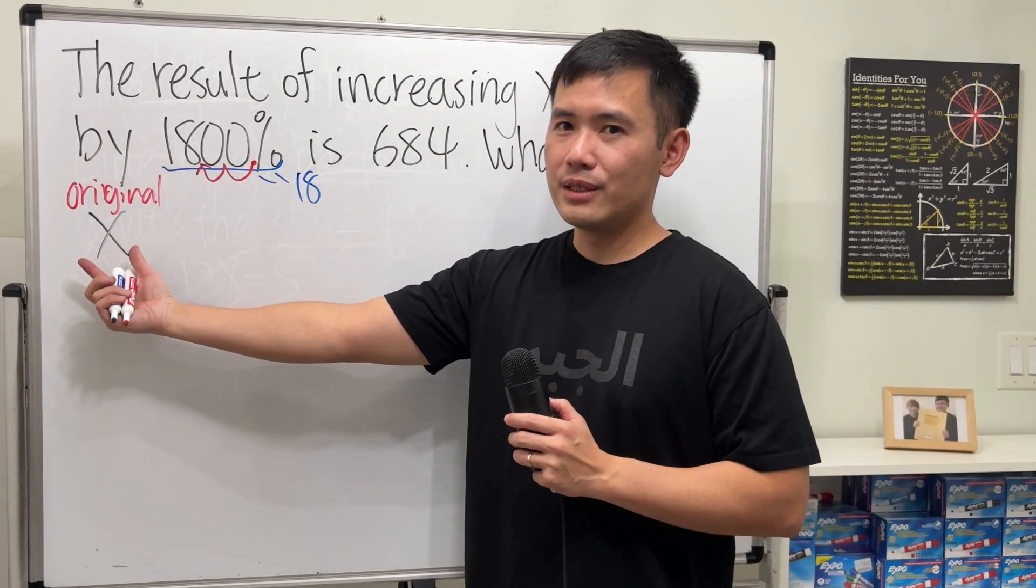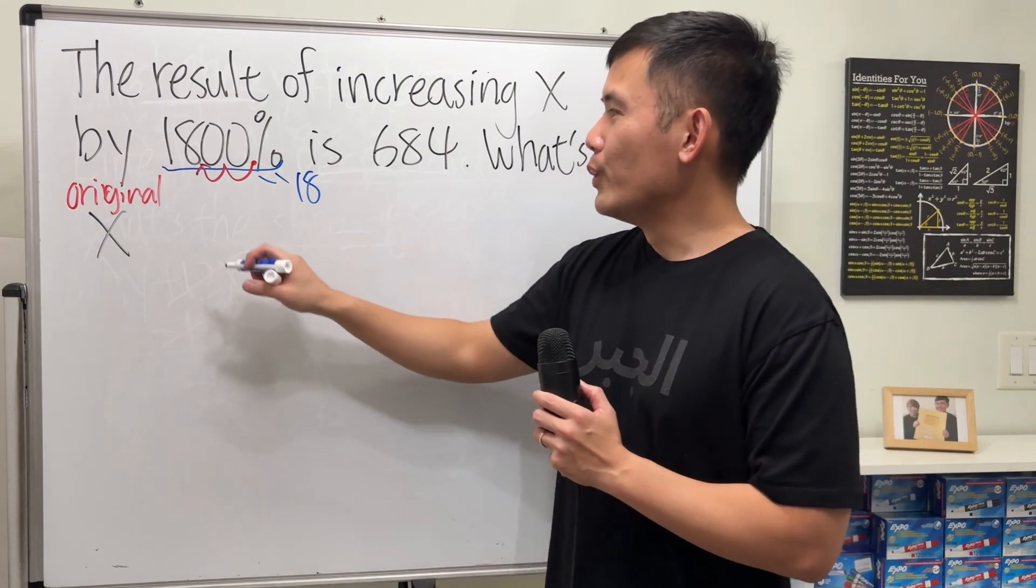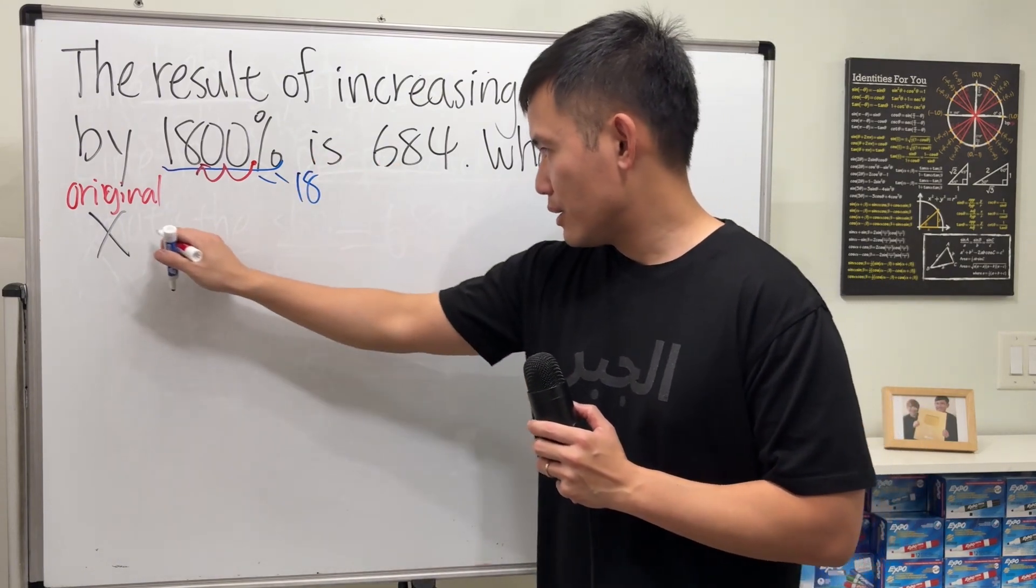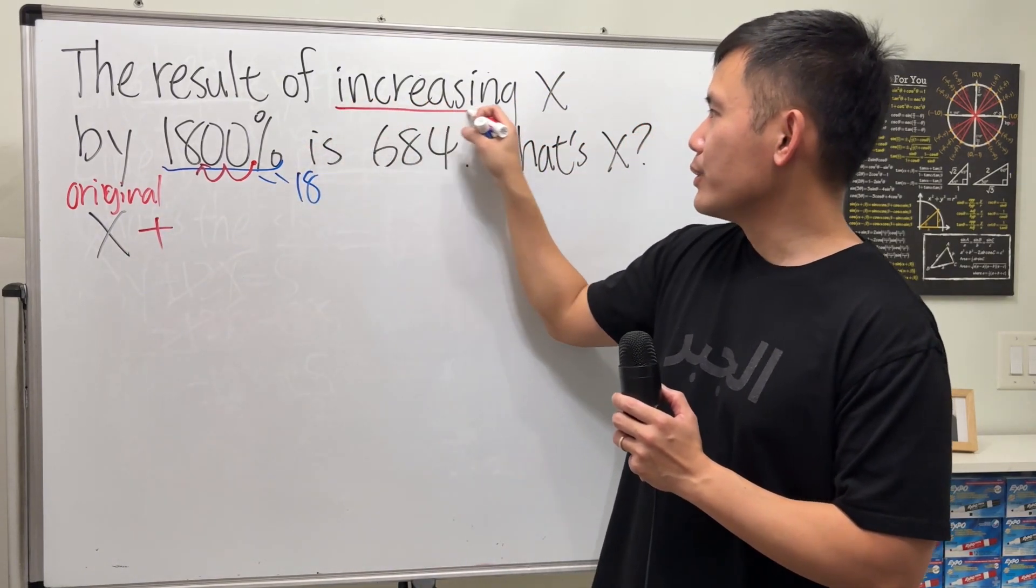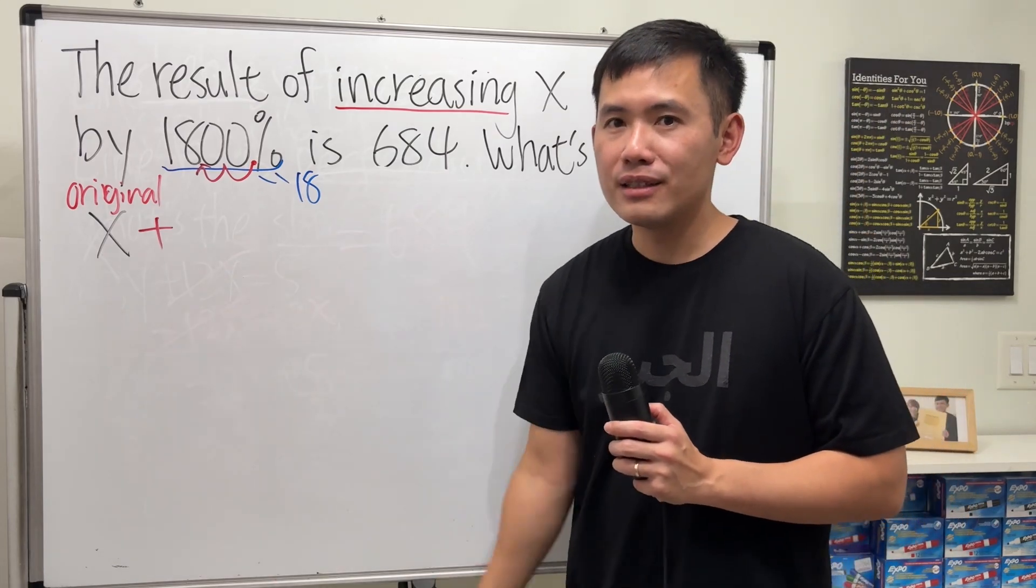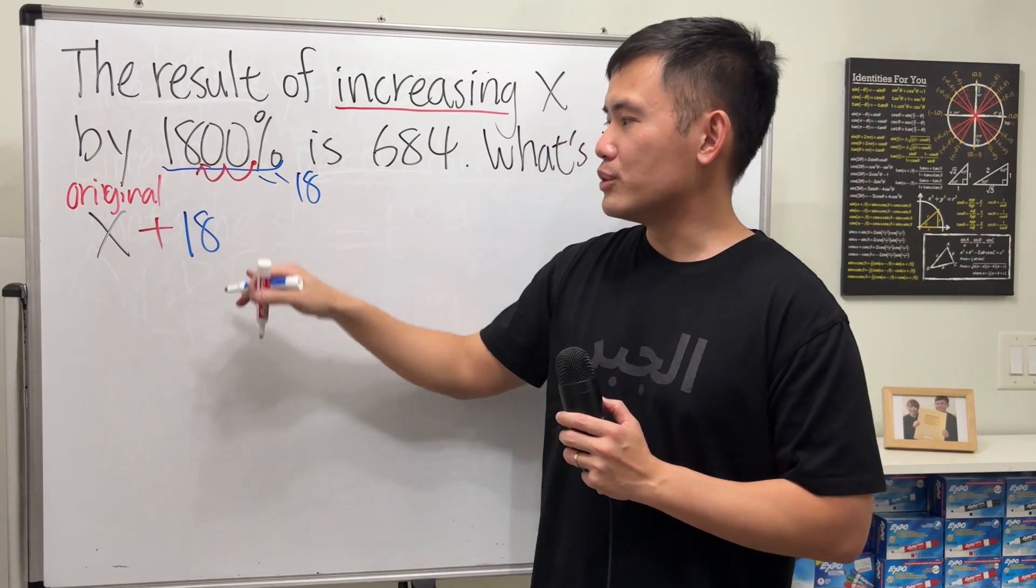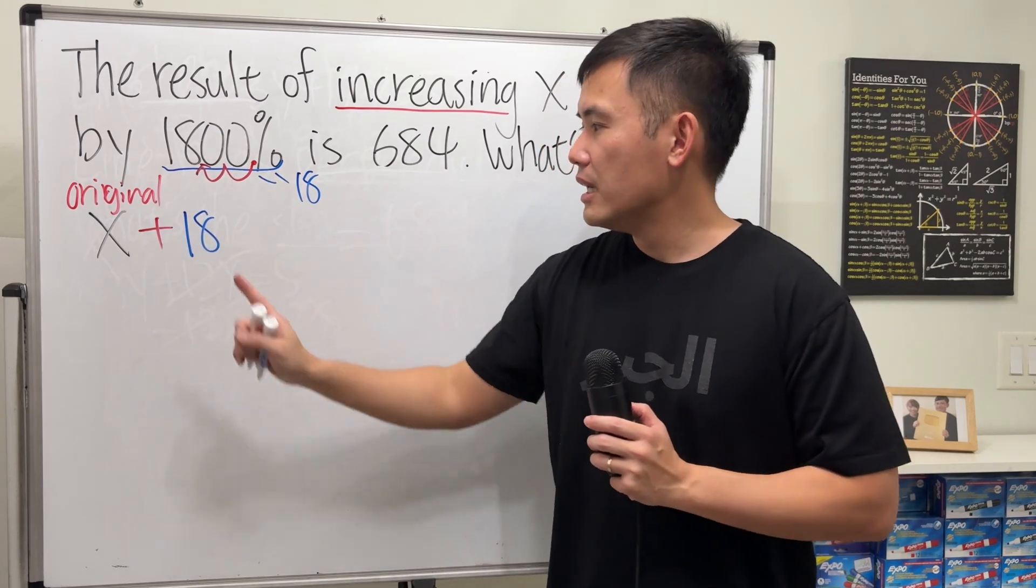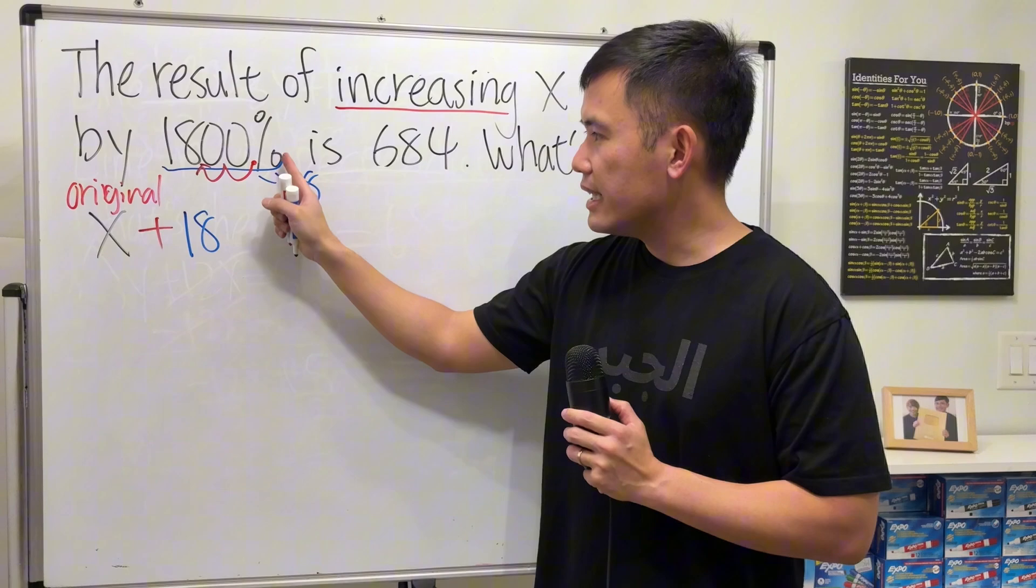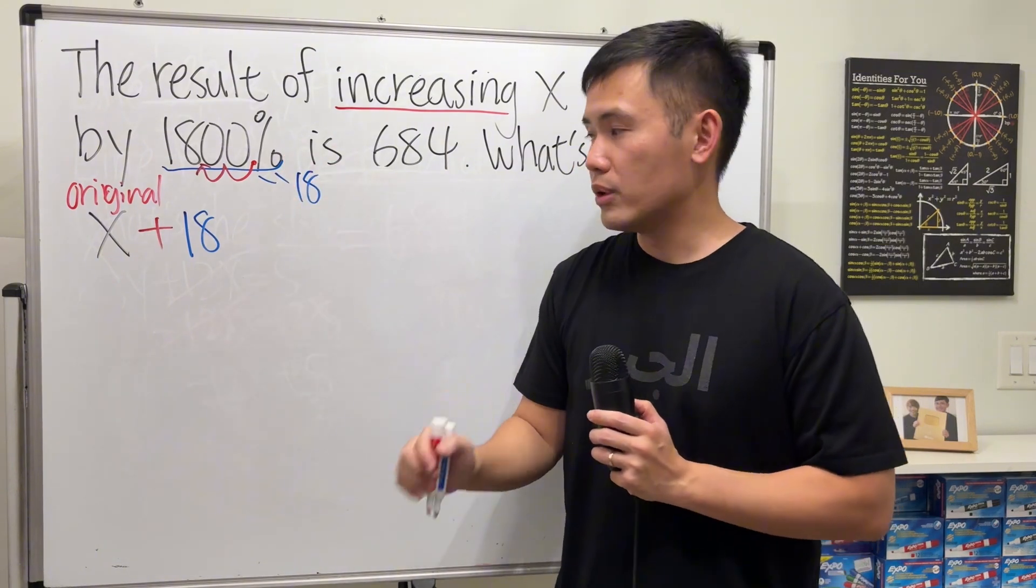Originally, you have just x. But what we are going to do is we are going to add, because it says we are going to increase, so we add. Not just 18, though. We don't just add 18, and we don't add 1800, no. What we are going to add is 1800% of the original.